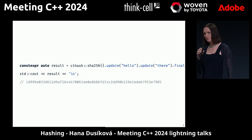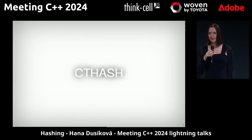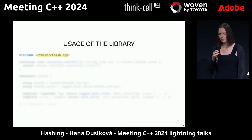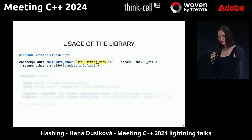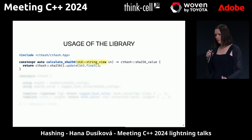But if you use this library, it can be. It's a small library I wrote because I wanted to learn how hashes work. It's called cthash. You include it — it's a one-header-only library. You calculate the hash, you have a string view and return type SHA256Value, which is just a wrapper over an array. You can convert it into an array easily, but it's a type-safe type which gives you information — it's an SHA256 hash.